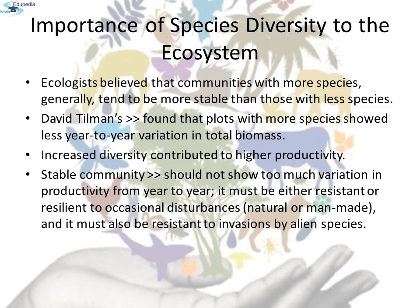The importance of species diversity to the ecosystem is a question for which ecologists have not been able to give a definitive answer. For many decades, ecologists believed that communities with more species generally tend to be more stable than those with fewer species. David Tillman's long-term ecosystem experiments using outdoor plots provided some tentative answers — plots with more species showed less year-to-year variation in total biomass, and increased diversity contributed to higher productivity. A stable community should not show too much variation in productivity from year to year, must be either resistant or resilient to occasional disturbances, and must also be resistant to invasions by alien species.